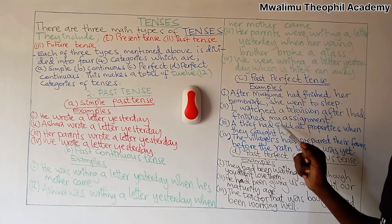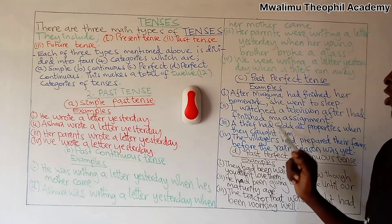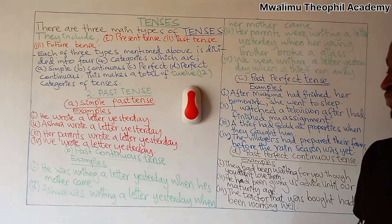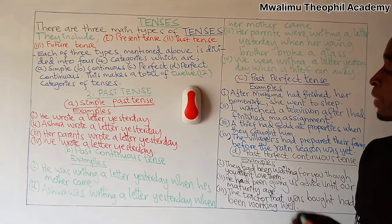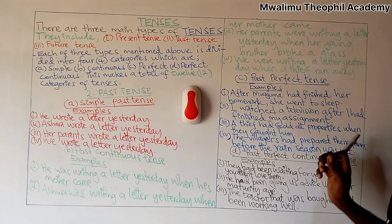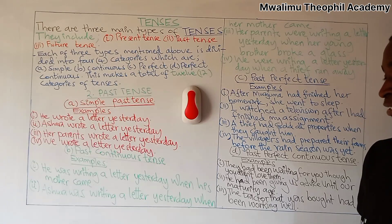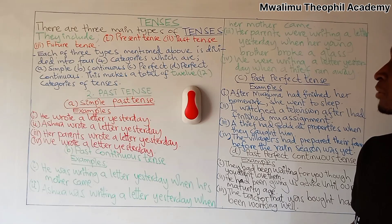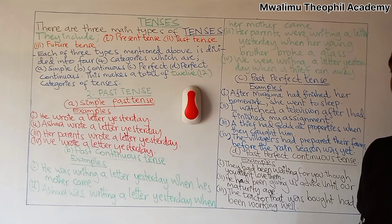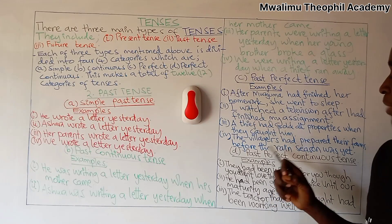Our third example: a thief had sold all properties when they caught him. Our fourth example: the villagers had prepared their farms before the rain season arrived.